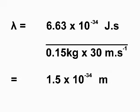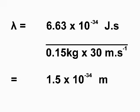To illustrate this, consider a cricket ball moving at 30 meters per second with a mass of 0.15 kilograms. The De Broglie wavelength is given by lambda equals H divided by mv. So lambda equals 6.63 times 10 to the minus 34 divided by 0.15 times 30, which equals 1.5 times 10 to the power of minus 34 meters — an answer so small you cannot attach any meaning to it.